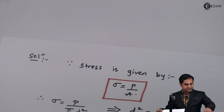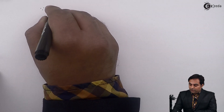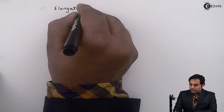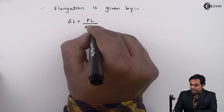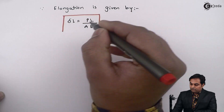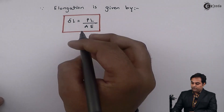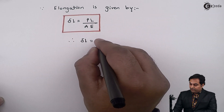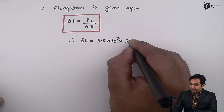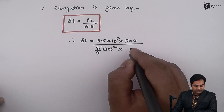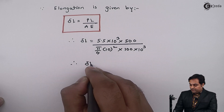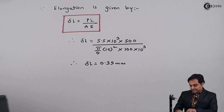The next question is to calculate elongation. The formula for elongation is delta L equals P L upon A E. Substituting: P is 5.5 into 10 raise to 3, length L is 500, area A is pi by 4 into 10 square (using diameter 10 mm), and Young's modulus E is 100 into 10 raise to 3. Solving this gives delta L equal to 0.35 mm.